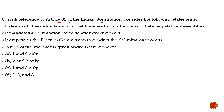Under Article 82, it was originally mandated that there should be delimitation of constituencies for Lok Sabha and state legislative assemblies after every census. However, one issue arose: the government also wanted states to control population growth. But delimitation based on population created a disproportional problem — southern states controlled their populations while northern states did not.